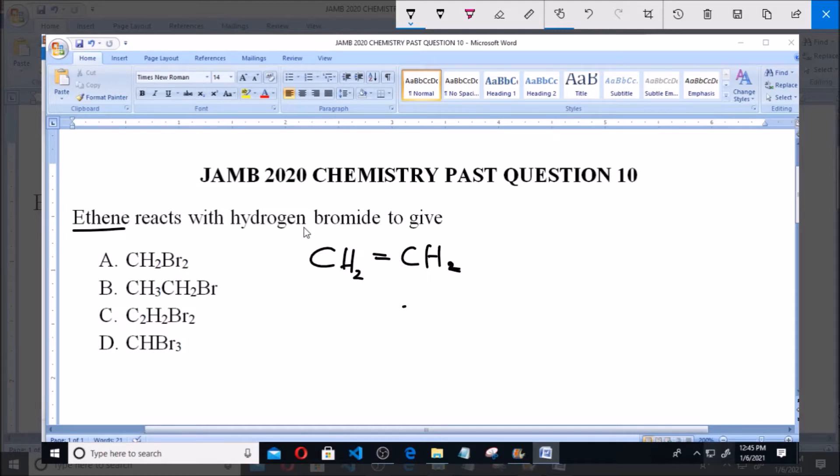Now when ethene reacts with hydrogen bromide which is HBr, there will be what we call addition reaction, that is the addition of hydrogen and bromine to this ethene molecule to give